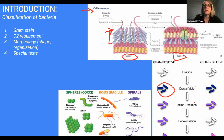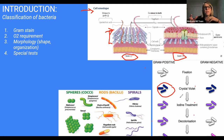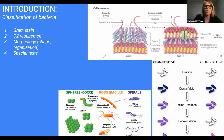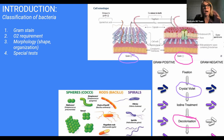Gram negative organisms have a periplasmic space that's perhaps a little bigger, but they don't have this large cell wall that holds onto the crystal violet. So when we add the iodine and decolorize — which basically washes it away — and then add the counterstain safranin as the last step, because the cell wall is smaller in gram negative organisms, it washes away and we get left with a pink color. So gram positive gives a purple stain from crystal violet, and gram negatives come out pink from decolorization and safranin counterstain.